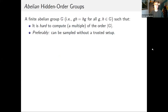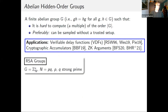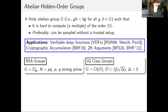An abelian hidden order group is a finite abelian group such that it is hard to compute a multiple of the order of the group, and preferably we want to be able to sample such a group without the need for a trusted setup. Some applications of hidden order groups are parallel delay functions, cryptographic accumulators, and zero-knowledge arguments. The most well-known examples of hidden order groups are RSA groups and imaginary quadratic class groups.